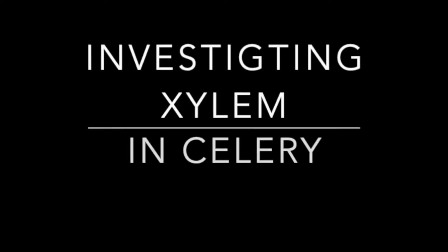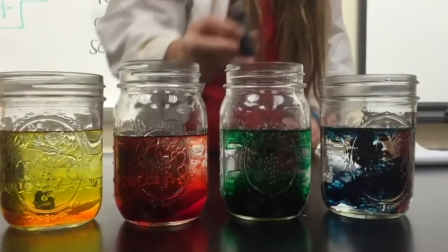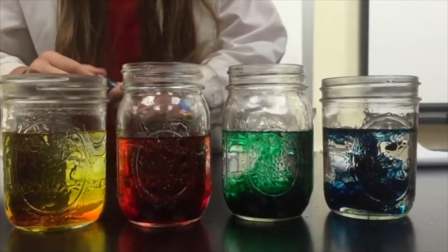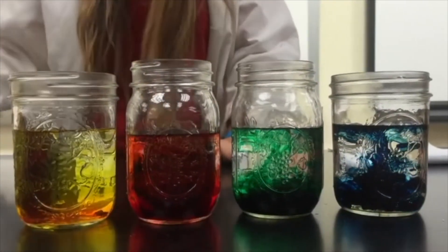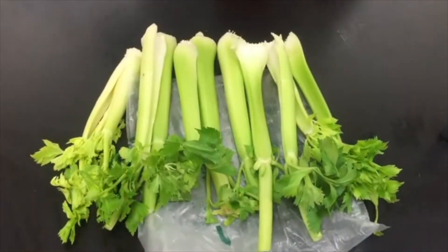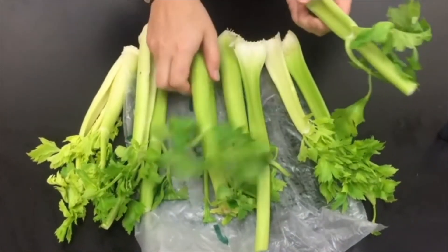This experiment is about investigating the xylem in celery. To do this you need some jars with food coloring mixed with water. The darker the better. And you need some leafy celery stalks.